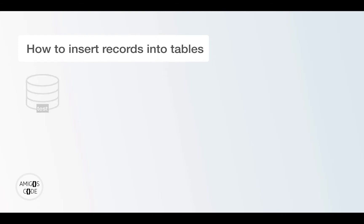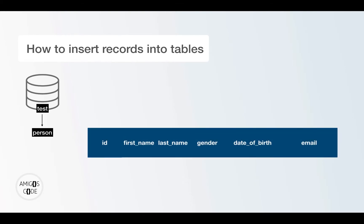In this video, let's go ahead and learn how to insert records into tables. So far we have a database called test with one table called person with the following columns: ID, first name, last name, gender, date of birth, and email.